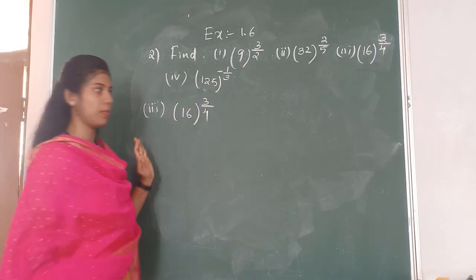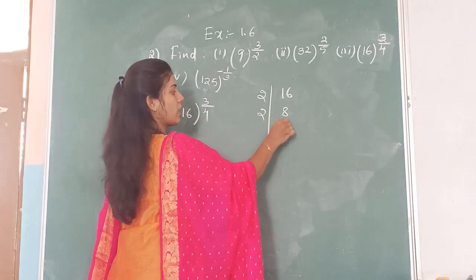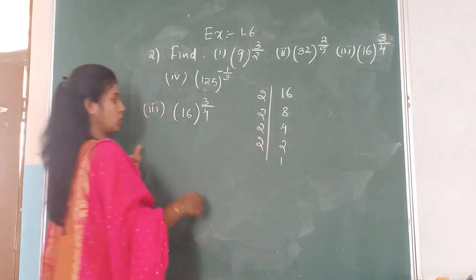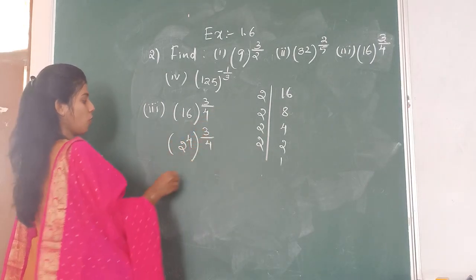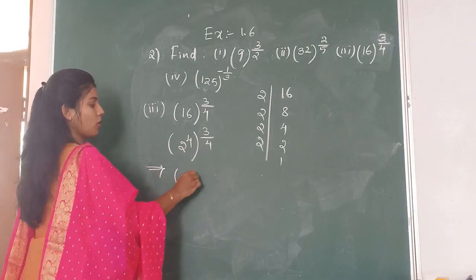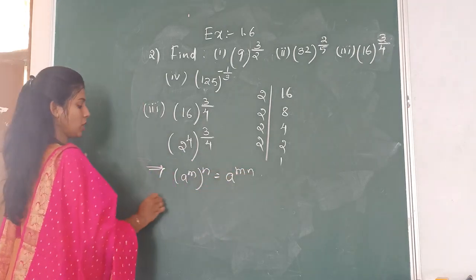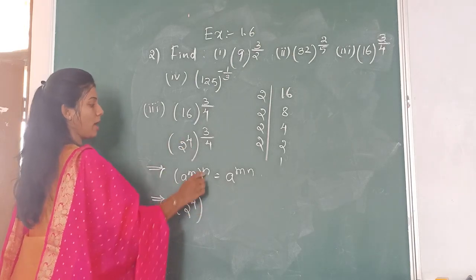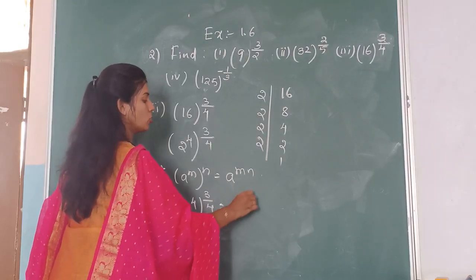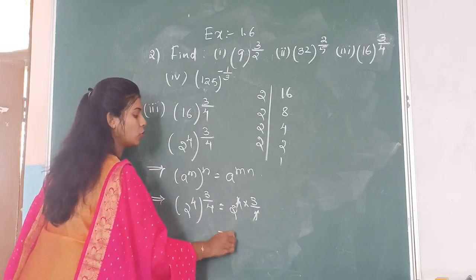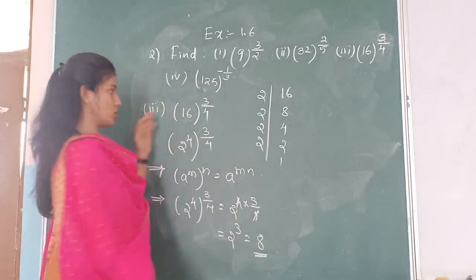The third one is 16 to the power of 3 by 4. Prime factorization of 16: 16 = 2 × 8 = 2 × 2 × 4 = 2 × 2 × 2 × 2, so 16 = 2 to the power of 4. Then 2 to the power of 4, whole to the power of 3 by 4 — applying the law with A = 2, M = 4, N = 3 by 4: 4 into 3 by 4, the 4s cancel, leaving 2 cubed. 2 cubed equals 8.